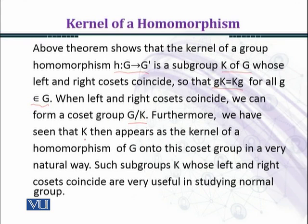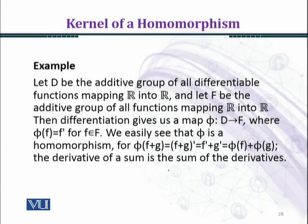Furthermore, we have seen that K then appears as the kernel of a homomorphism of G onto this coset group in a very natural way. Such subgroups K whose left and right cosets coincide are very useful in studying normal groups.